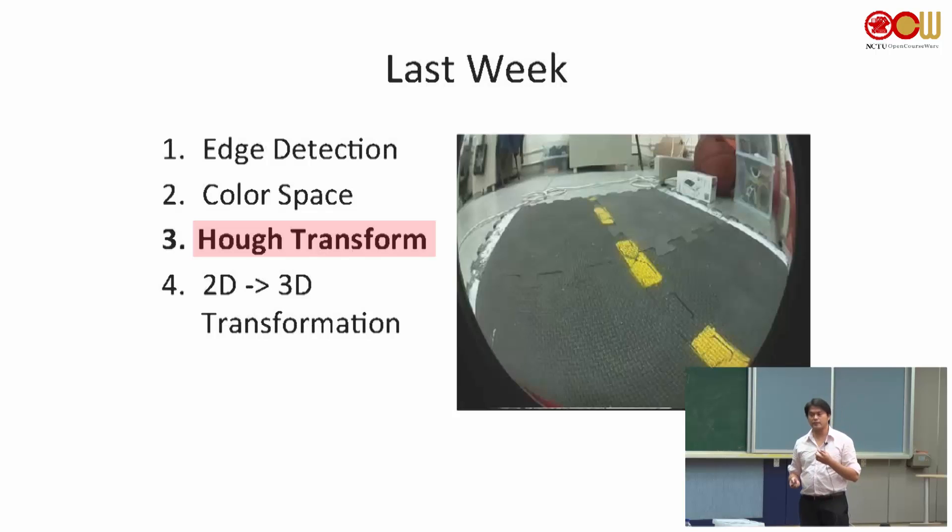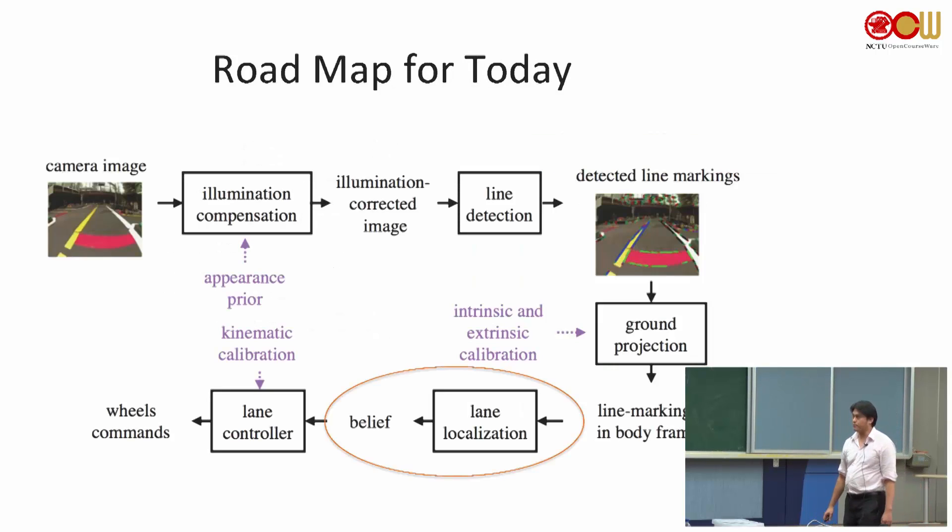So we will do another voting mechanism again in the lane filter. This is the roadmap. We have done some of the modules here, and today we will talk about this. The lane filter or lane localization will generate a belief map.